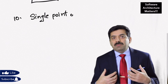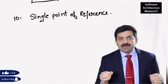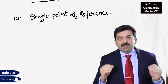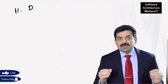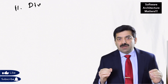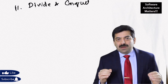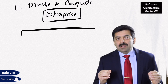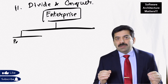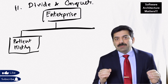The tenth technique is single point of reference. There should be a single point of reference and a single declaration of a type in the system. Some languages like C++ allow only one definition of a type, but you can declare it multiple times.